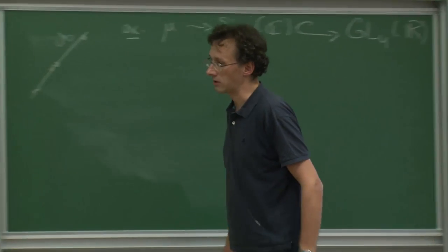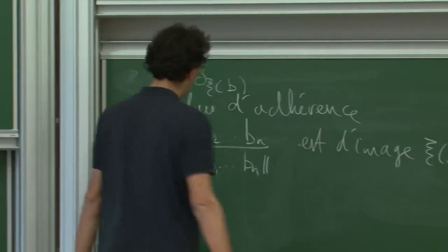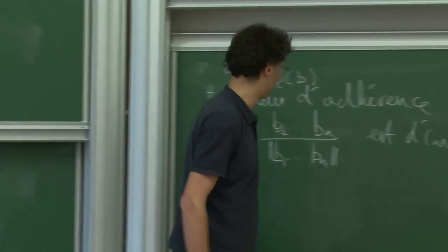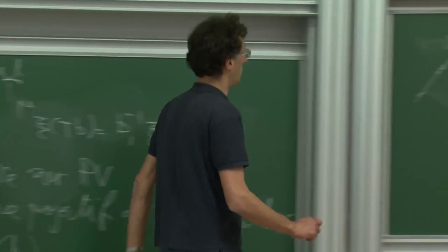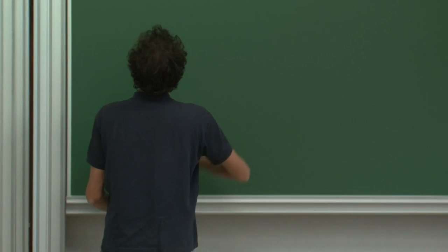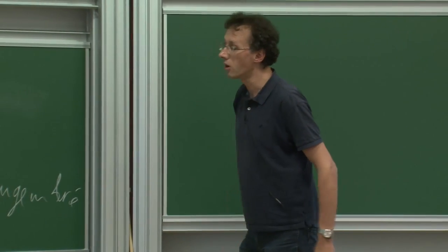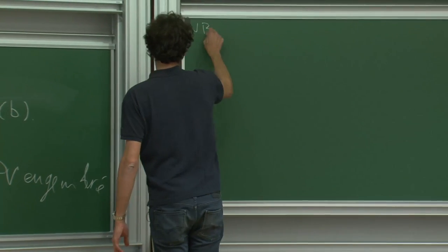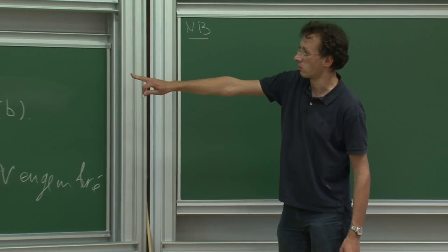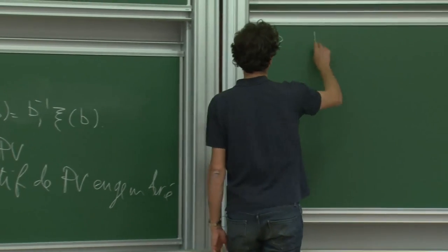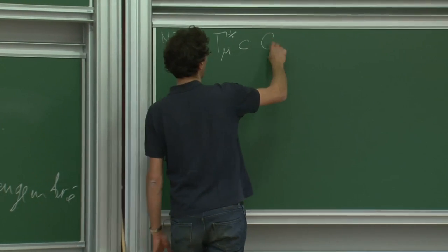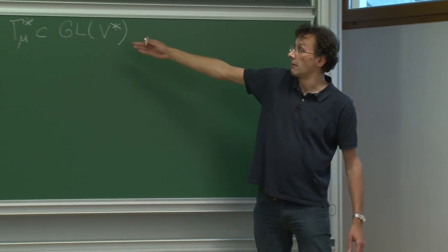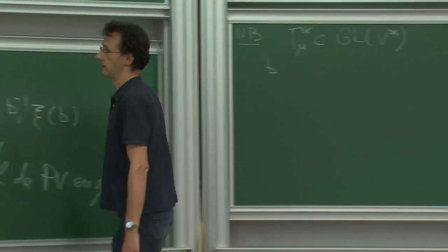Une remarque : ce que j'ai fait pour le semi-groupe, je peux l'appliquer au semi-groupe adjoint. Les adjoints de mes matrices vivent dans le groupe linéaire du dual V*. Connaître l'image de l'adjoint d'une matrice, c'est connaître son noyau. Donc en étudiant la marche aléatoire adjointe, j'obtiens un énoncé adjoint : toute valeur d'adhérence de la matrice normalisée a pour noyau l'orthogonal de l'image de xi*, noté eta_B.